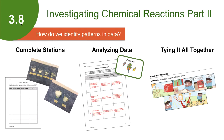In lesson 3.8, students have some time to finish their stations from the previous class period. Then we guide students through recognizing patterns. In this case, the patterns allow students to discover different forms of evidence that a chemical reaction has occurred.